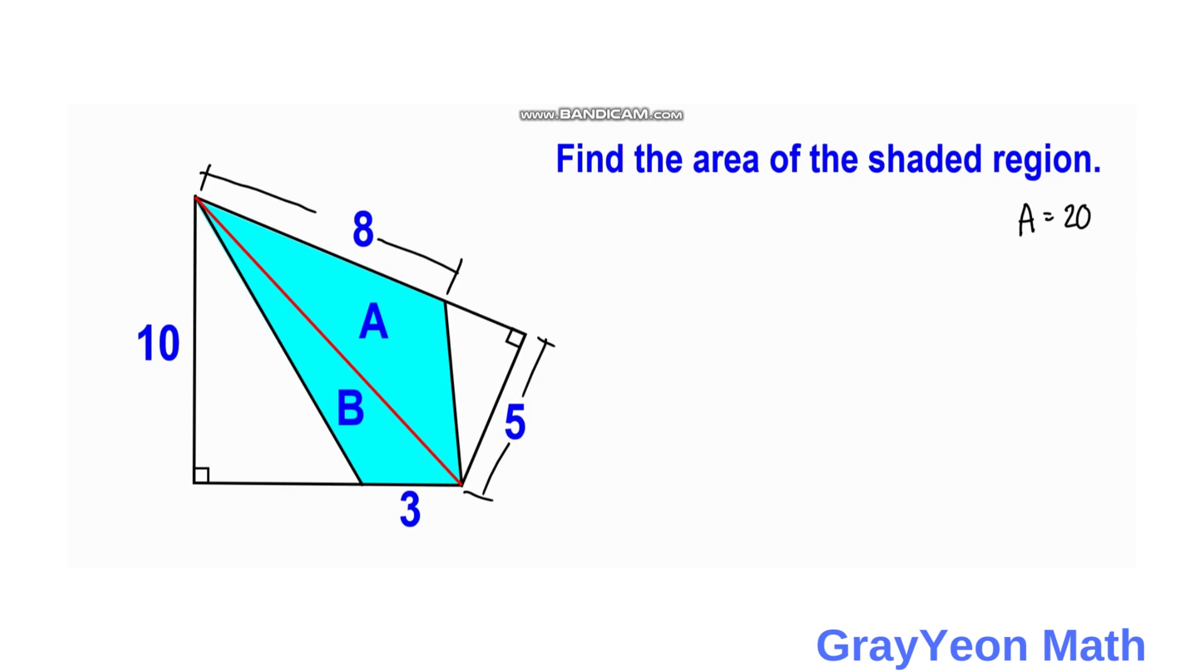And now for B, since the base is - you can notice this is 3 - and the height is actually 10, the perpendicular height. So we have area for B is equal to 1 half times the base which is 3 times the height which is 10. So we divide this by 2, so we have 5. So B is equal to 15 square units.